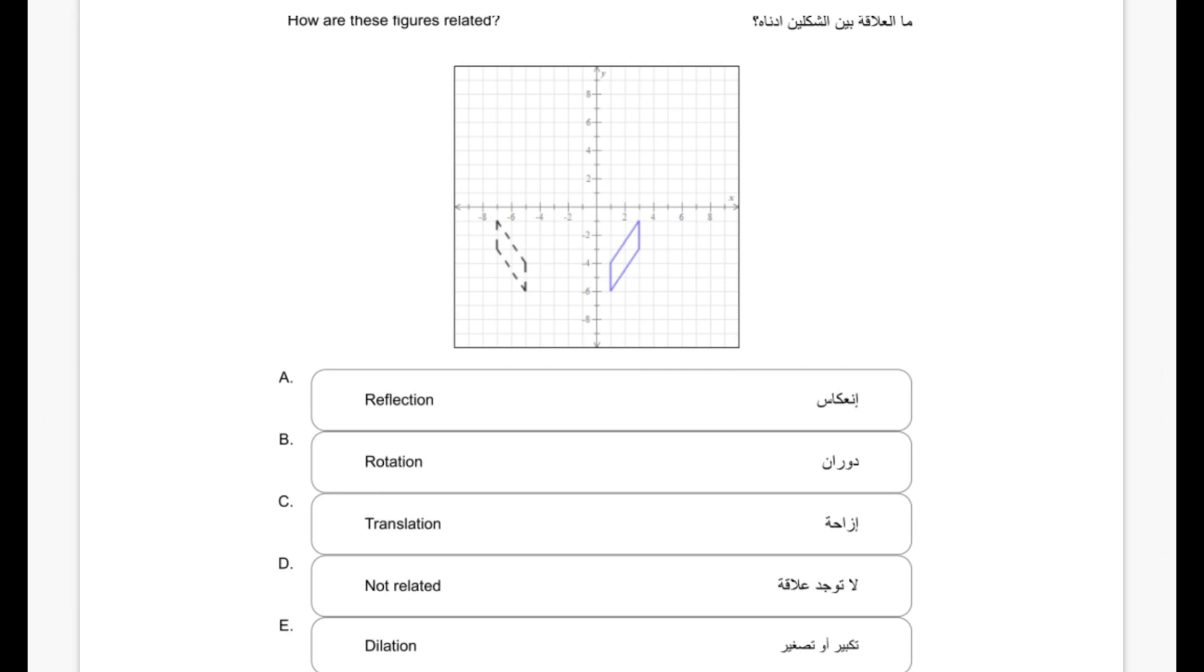The question asks: how are these figures related? We have an object over here and we have the following image for such an object. We need to identify what movements caused the object to be mapped to this image.